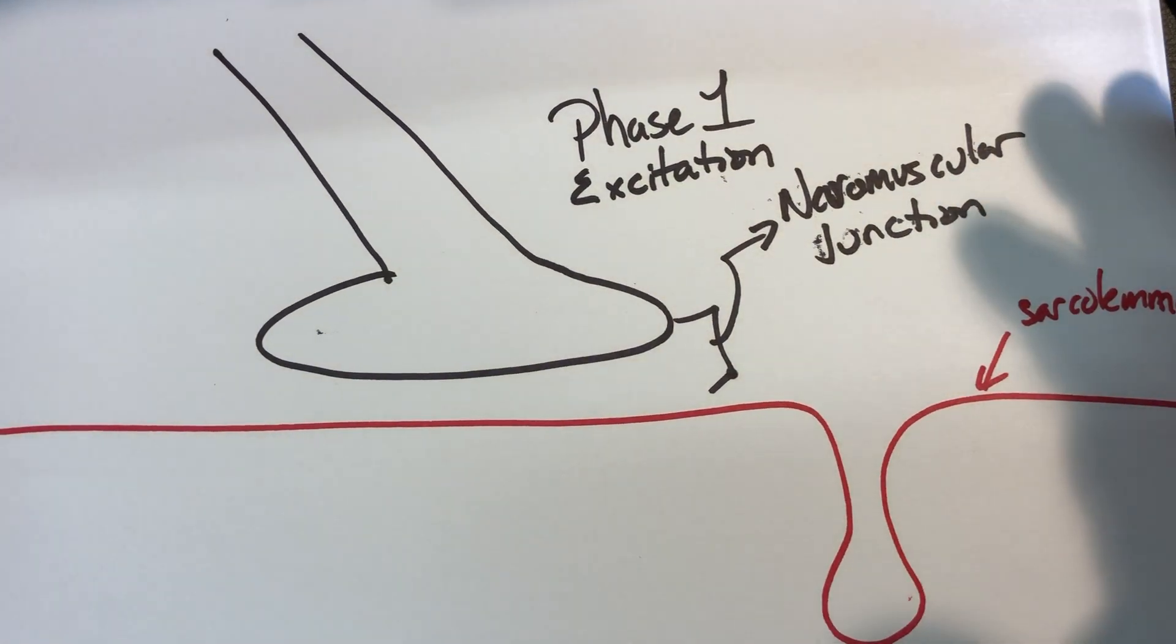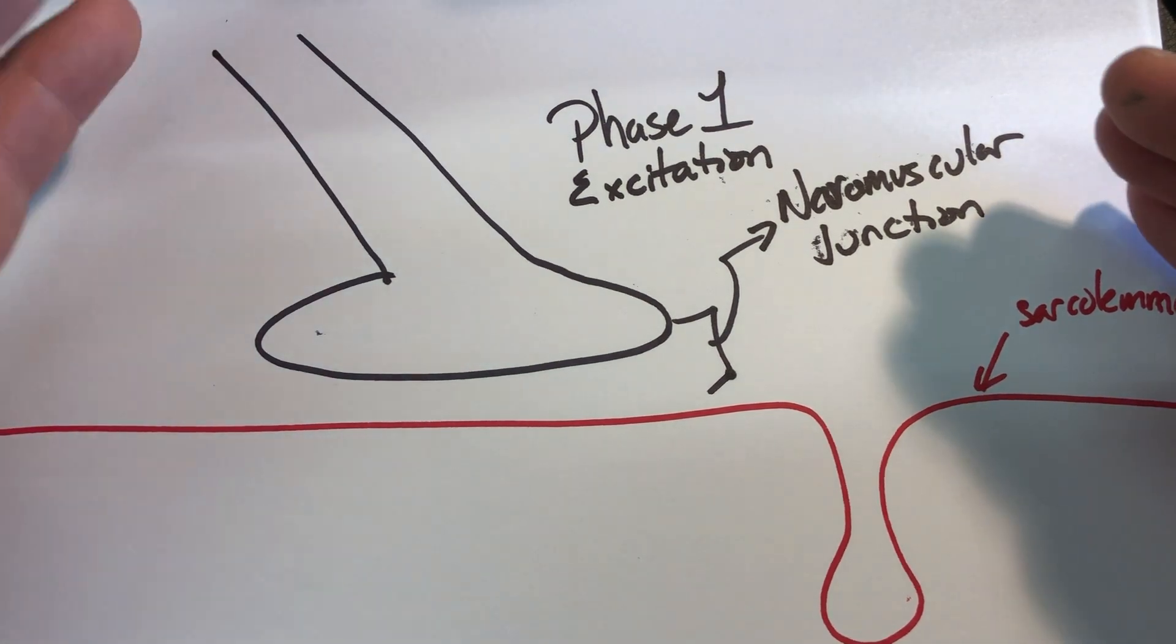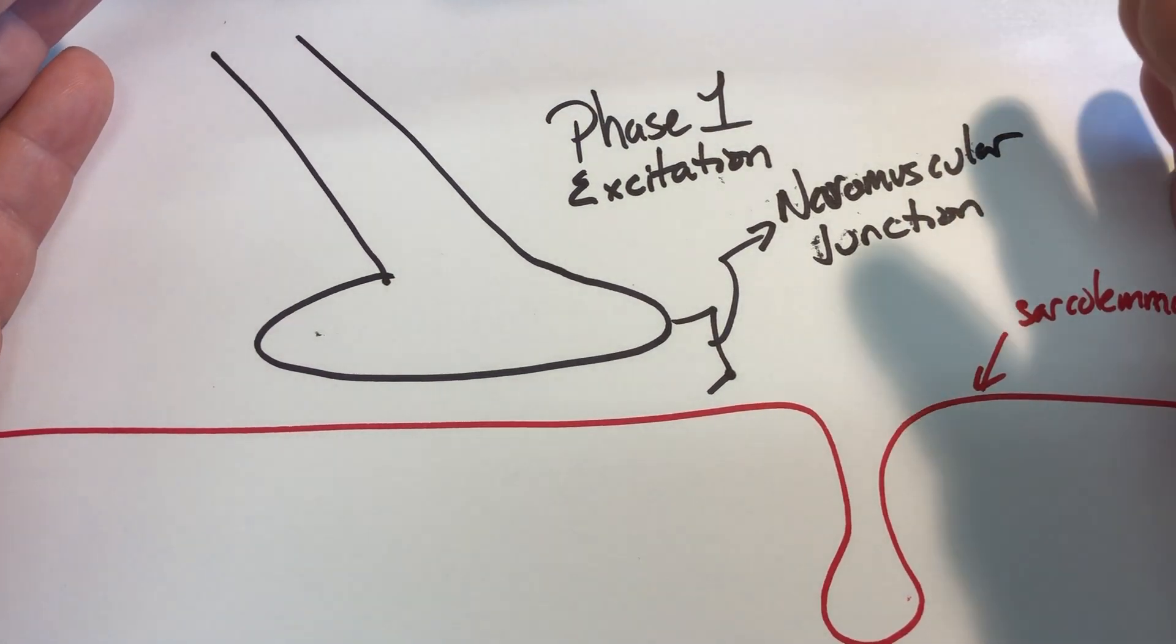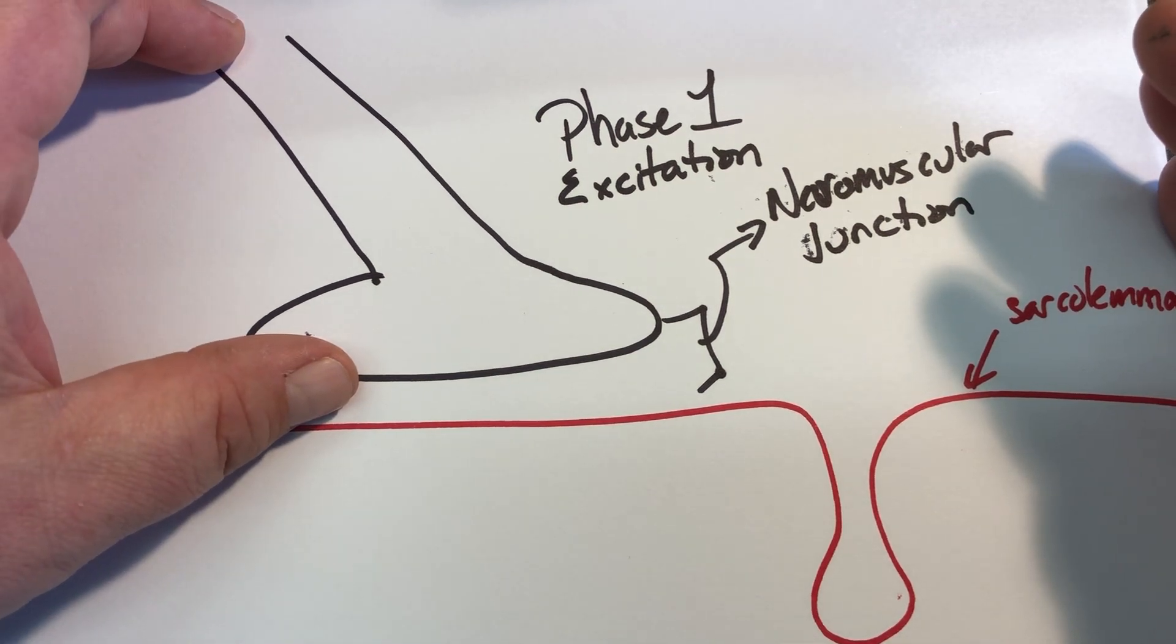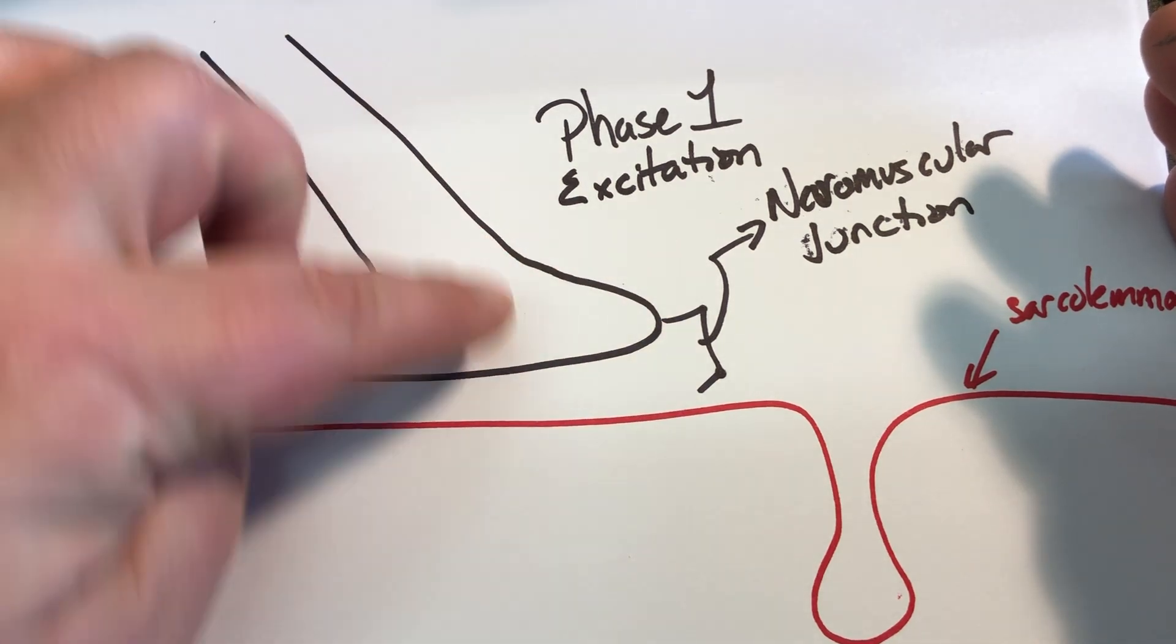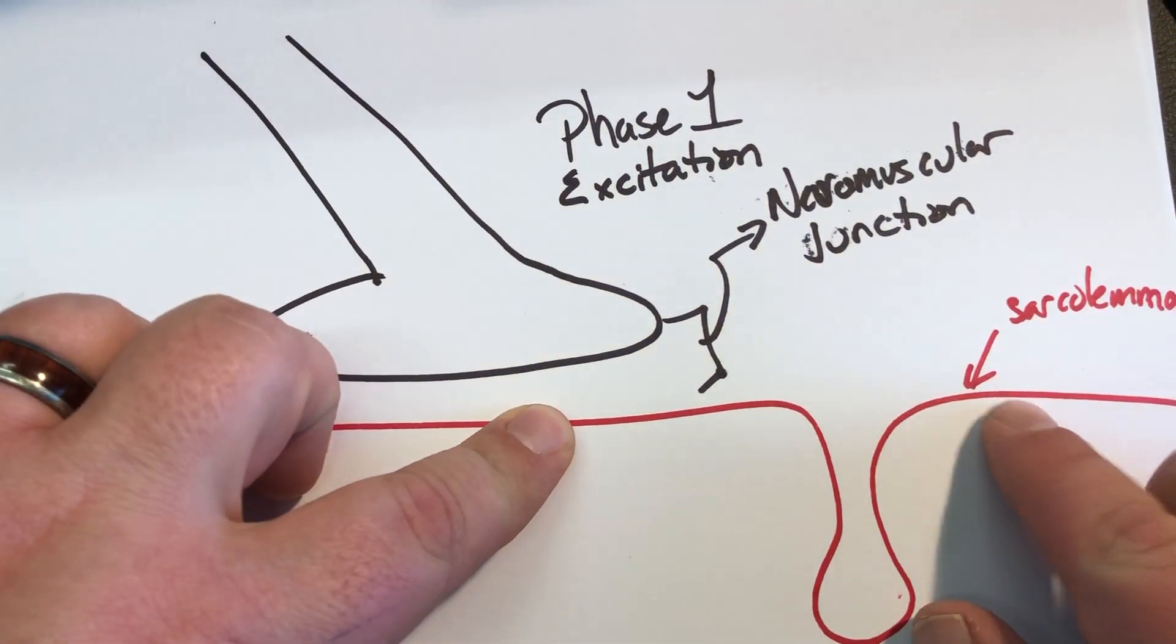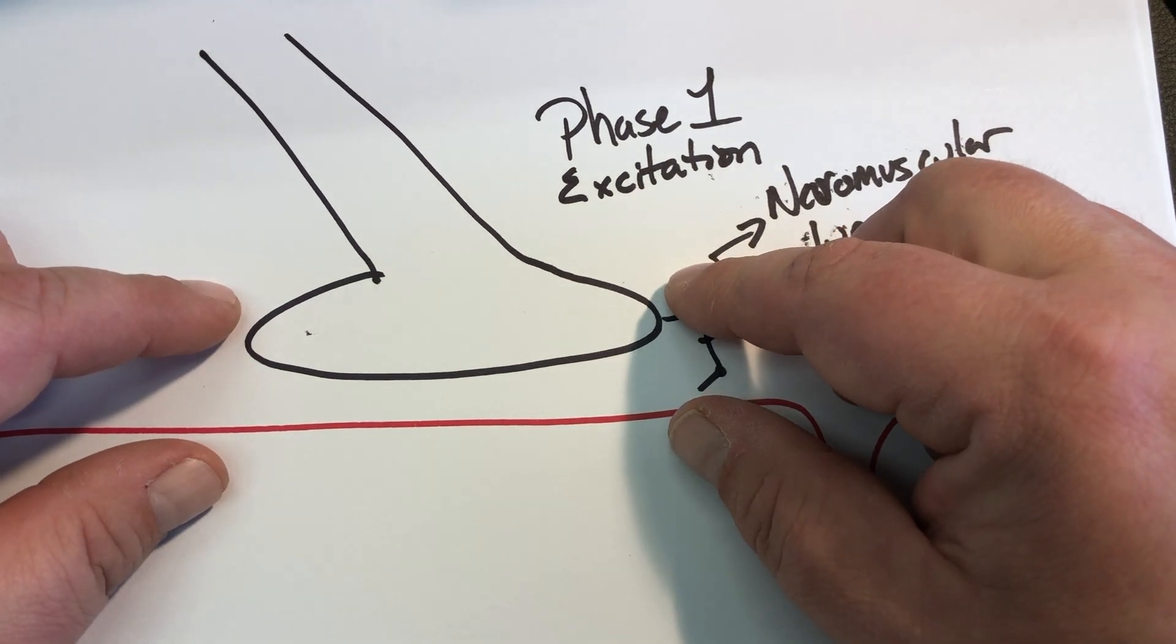All right, so let's apply depolarization, repolarization to the neuromuscular junction. We're going to look at this in two phases. So nervous cell, here's our neuron. This is our synaptic, presynaptic side. Here's our postsynaptic side on the sarcolemma, so this is the muscle cell, so this represents our neuromuscular junction.